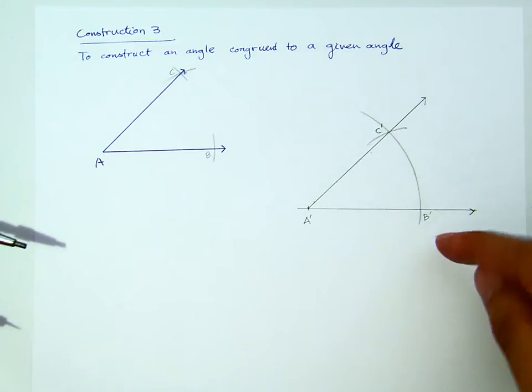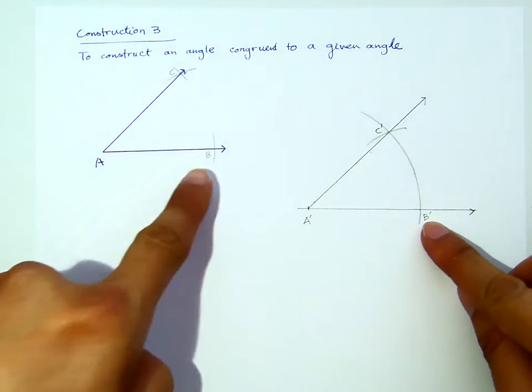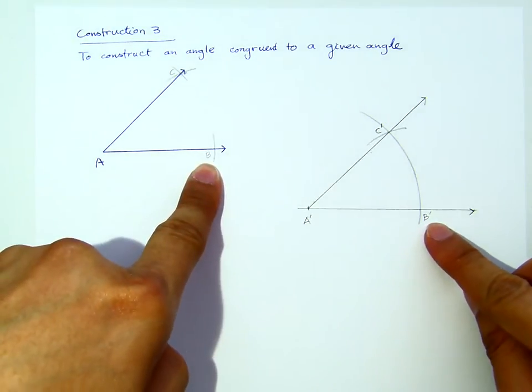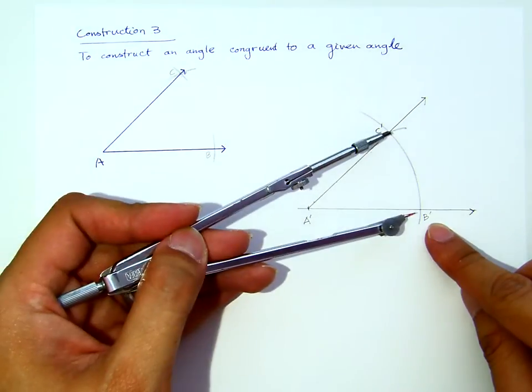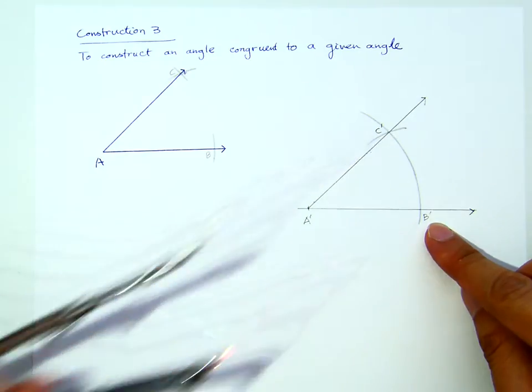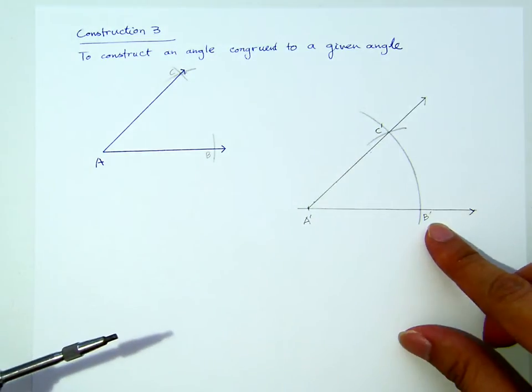Now, the arc that intersects one ray, you call that B' in this case. And then, using an opening here, you copy there. That's how you get your C'.